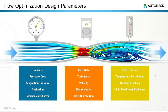Looking at heat transfer, we can determine our temperature distribution — where we have hot points, where we have cold points, and how consistent that is over the course of the study. We might even have a multi-fluid heat exchanger scenario, such as a refrigerant being used in a system to cool using coils or pipes. You can use multi-fluid cooling as well.